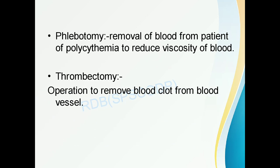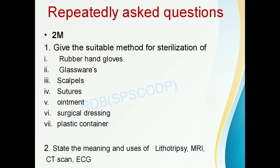Phlebotomy is the removal of blood from patients with polycythemia to reduce the viscosity of blood. Polycythemia is an increased count of RBCs above the normal level. Thrombectomy means removal of a blood clot from a blood vessel. These are the nomenclature and uses of various types of surgical instruments, hospital equipment, and health accessories, along with important questions from this chapter.